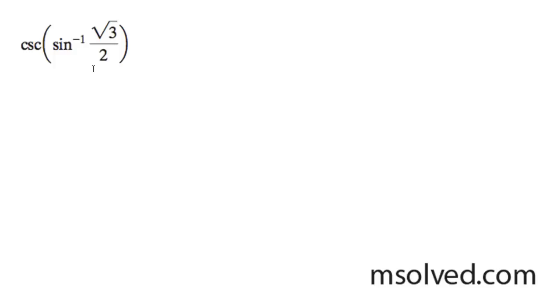Let's find the cosecant of the inverse sine of root 3 over 2. And what I'm going to do here is I'm going to start off by solving this inside term here. So I can just rewrite this real fast, as long as I keep my bounds between negative pi over 2 and pi over 2.